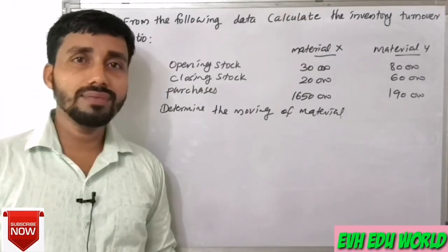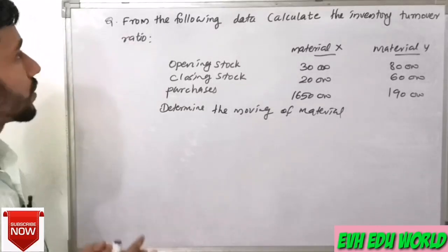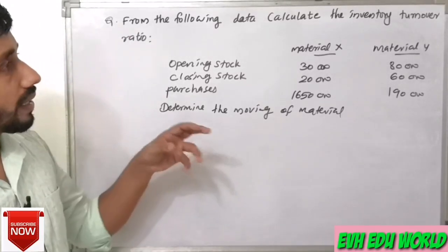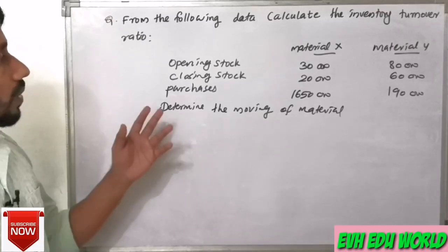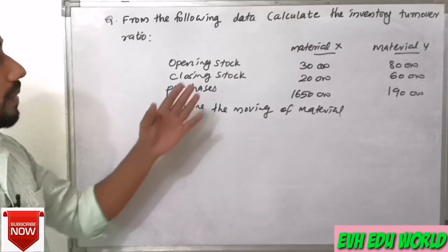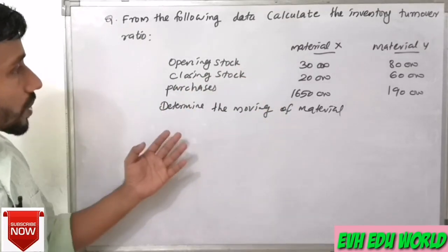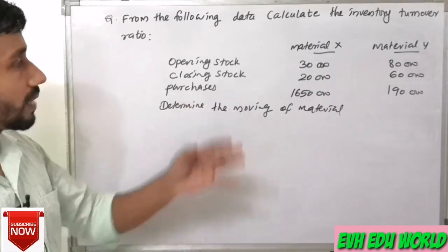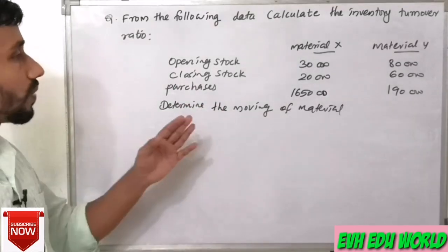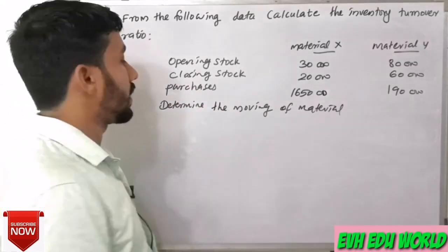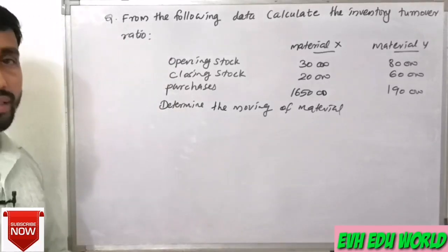We will now calculate the inventory turnover ratio from the following data. Opening stock: Material X is 30,000, Y is 80,000. Closing stock: X is 20,000, Y is 60,000. Purchases: X is 1,65,000, Y is 1,90,000. Determine the movement of material.